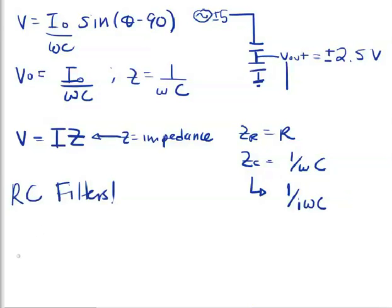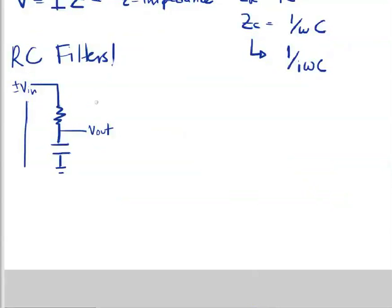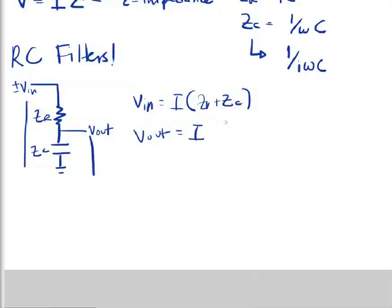First, let's construct a circuit with a resistor leading a capacitor. So in this case, V_in is going to equal the current times the impedances of the resistor and the capacitor. And V_out is just this drop in voltage. So that's going to equal the current times the impedance of the capacitor. Solving for I, we have V_out is equal to...